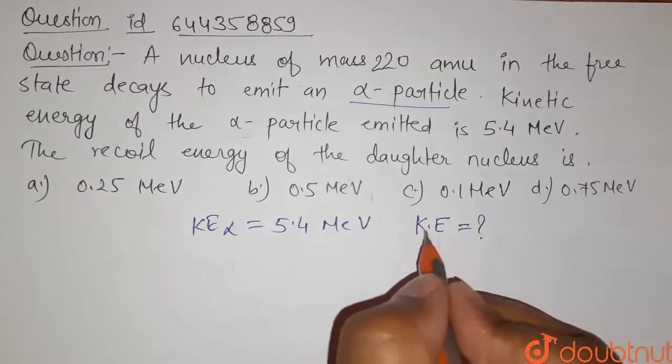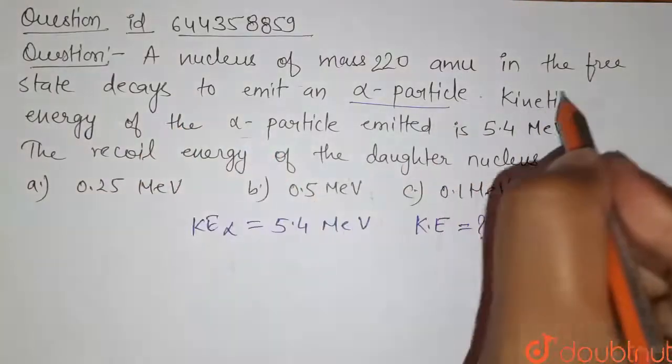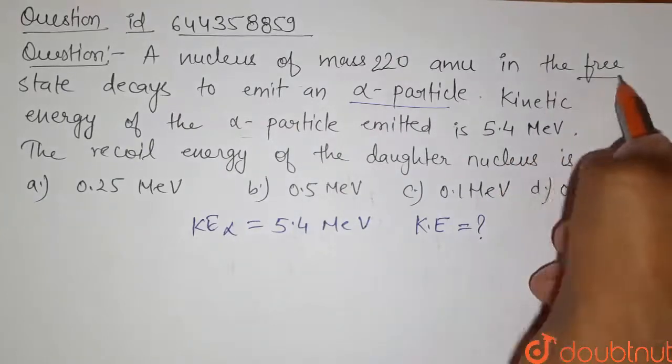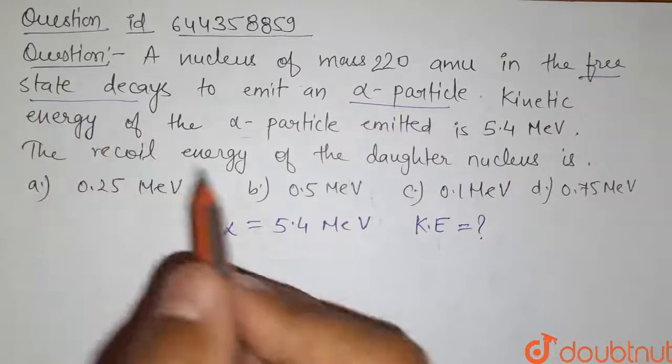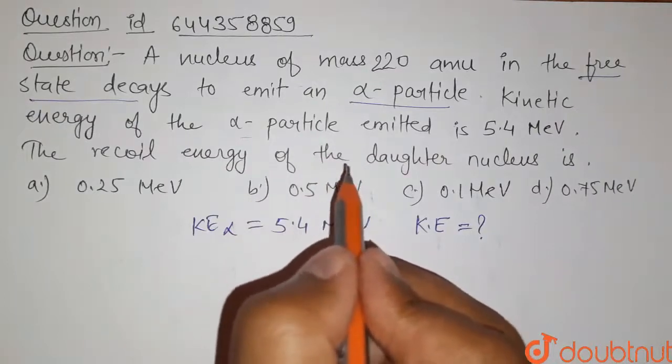So the value of KE we have to find. Now here it is given that the nucleus is in free state, that means it is in rest state. Therefore its initial momentum equals zero.